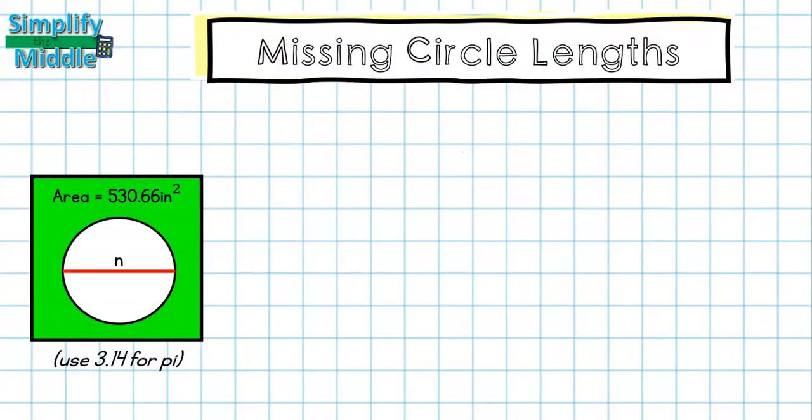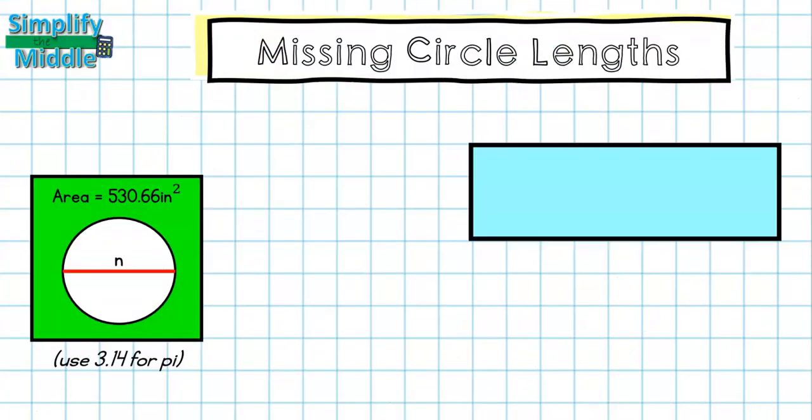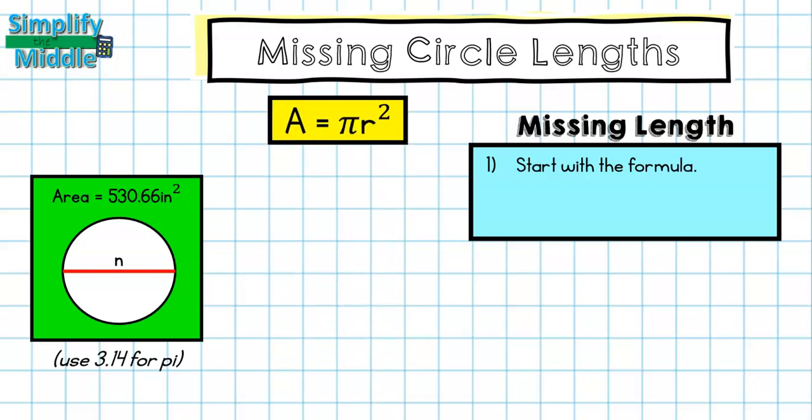Let's try an example with area this time. You're going to find the steps are very similar for the very first three steps. The first thing I'm going to do is start with the formula. So I have area equals pi times radius squared, and then I'm writing that formula out.